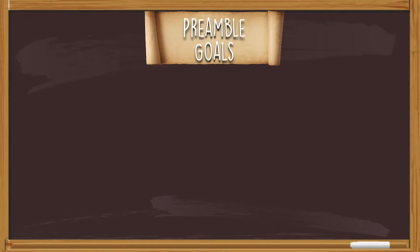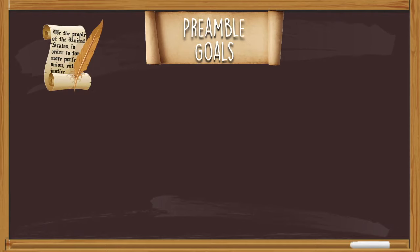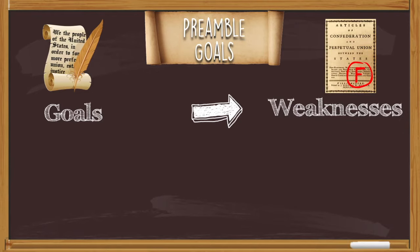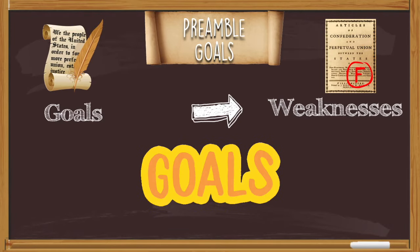Let's put these up on the drawing board and compare them side by side. On the left-hand side we have our brand new Constitution and its goals. On the right side we have the Articles of Confederation, our first attempt that was a failure, and all of the weaknesses that were created by that document. If you're interested in more information about the Articles of Confederation, you can check it out. Let's get to these goals.